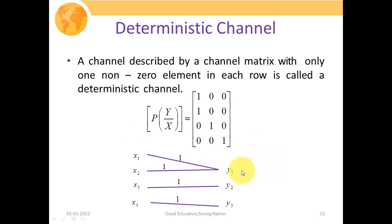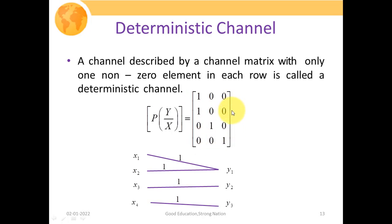Next is the deterministic channel. A channel described by a channel matrix with only one nonzero element in each row is called the deterministic channel. Note the keyword: each row — whereas in the lossless channel we talk about each column. The transition matrix is [1,0,0; 1,0,0; 1,0,0; 0,0,1] — each row has exactly one nonzero element. Here X1, X2, X3, X4 are the generated symbols at the source side and Y1, Y2, Y3 are the received symbols.